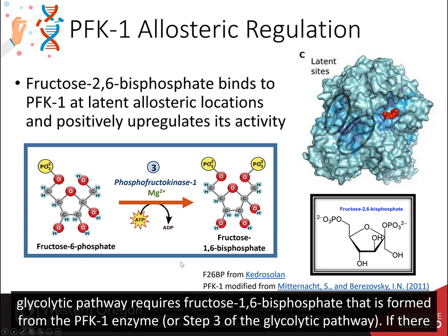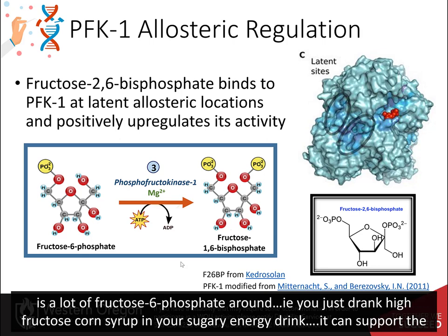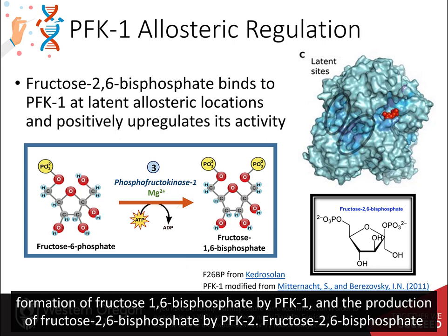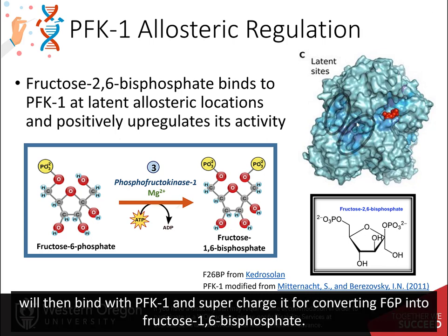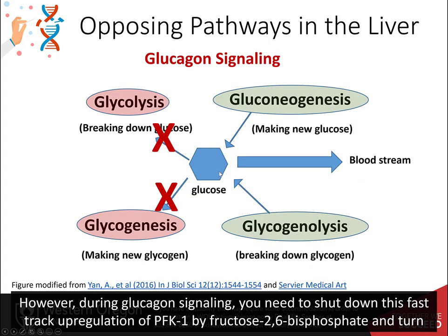If there is a lot of fructose 6-phosphate around — for example, you just drank high fructose corn syrup in your sugary energy drink — it can support the formation of fructose 1,6-bisphosphate by PFK1 and the production of fructose 2,6-bisphosphate by PFK2. Fructose 2,6-bisphosphate will then bind to PFK1 and supercharge it for converting fructose 6-phosphate into fructose 1,6-bisphosphate. However, during glucagon signaling, you need to shut down this fast-track upregulation of PFK1 by fructose 2,6-bisphosphate and turn down the glycolytic pathway.